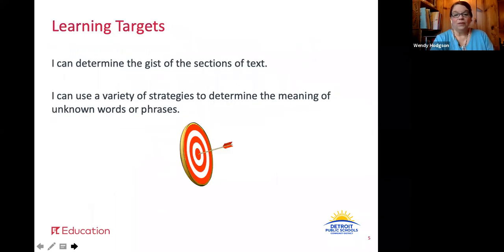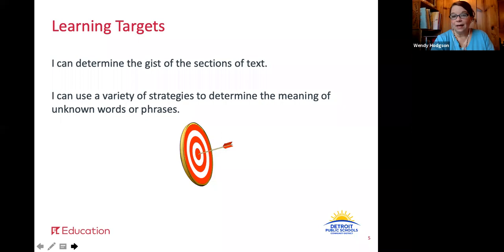We have two learning targets today for lesson 25. One is: I can determine the gist of the sections of text. The gist is just the general idea and understanding — what is it mostly about? A gist is not really a main idea. We will read each of the sections of the article, and your note catcher today will have you write a gist statement for each of those sections.